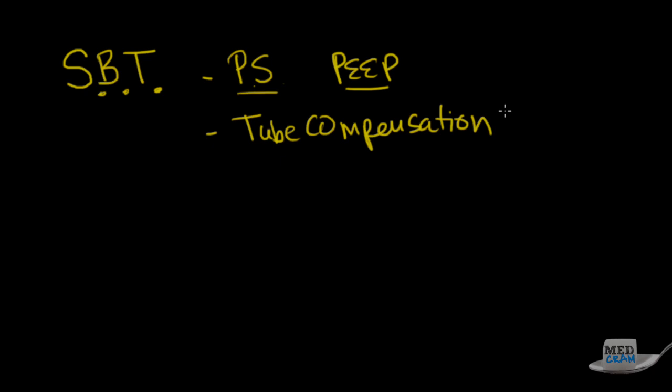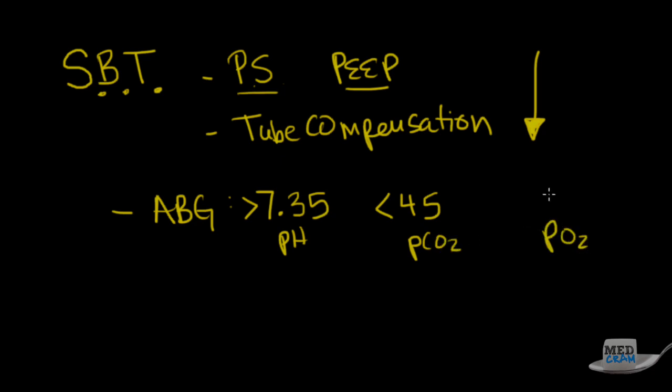And simply this compensates for the resistance of the tube. The bottom line is that there are several different ways that you can do a spontaneous breathing trial. What you want to do is get the support as low as physiological and see how the patient does over the next one, two, three hours. And then draw a blood gas, an ABG. And generally speaking, if the patient looks like they're comfortable, looks like they're able to take in some deep breaths, they're not breathing too quickly, and they've got a blood gas that looks pretty good. And what I mean by pretty good is the pH is greater than 7.35 and it's less than a pCO2 of 45. And the pO2 is in a reasonable range, so somewhere 60 to 70 or above.